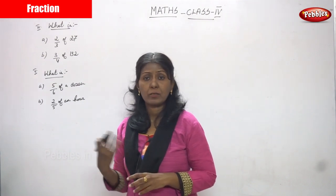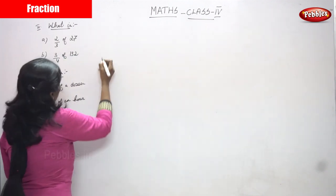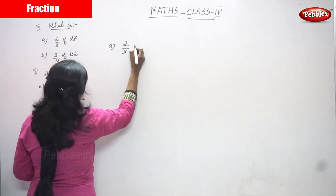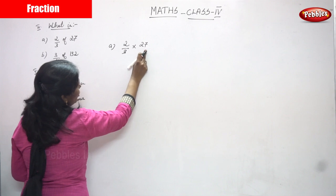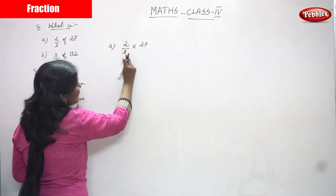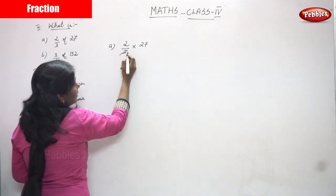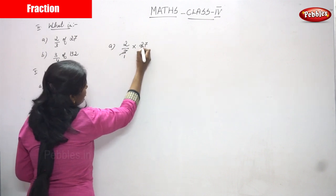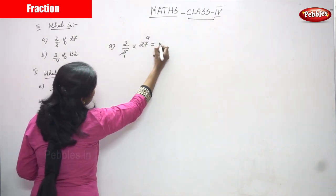So we are going to find how much part we have. 2 by 3 of means multiply — so 2 by 3 into 27. 27 is a whole number and 2 by 3 is a fraction. 2 is the numerator and 3 is the denominator. So we just have to cancel. If you cancel by 3 — 3 divided by 3 you get 1. And 27 divided by 3 you get 9. So the answer is 2 into 9.